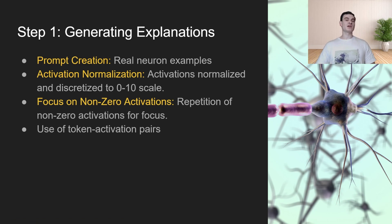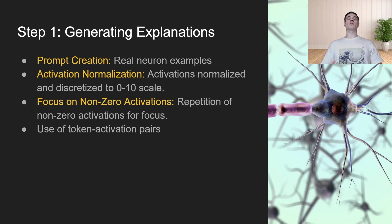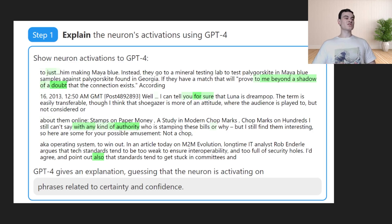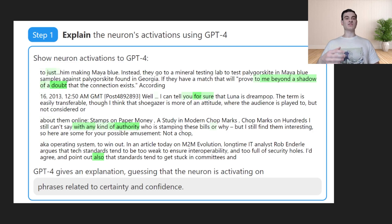Step one is to generate the explanation. This involves creating a prompt by first creating the token activation pairs, where the activations are normalized to be discrete numbers between 0 to 10. They also found that focusing on non-zero activations generally results in a better performing model, because tokens with a higher activation are more representative of what the neuron is actually doing. After normalization, we have the token activation pairs and ask GPT-4 to generate a natural language hypothesis for what the neuron might be activating on. For example, tokens with high activation included phrases like 'beyond a shadow of a doubt' and 'for sure,' so GPT-4 explained that maybe this neuron is activating on phrases related to certainty and confidence.